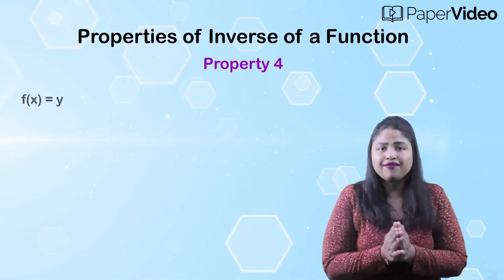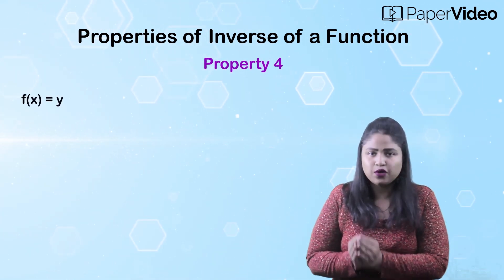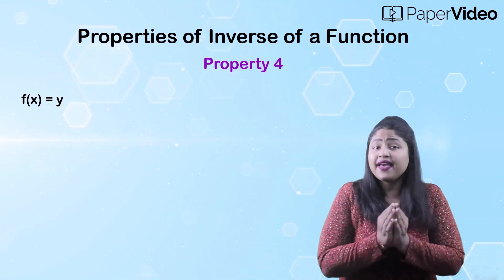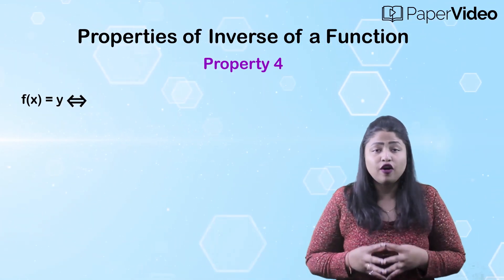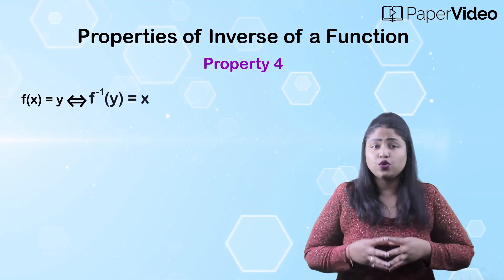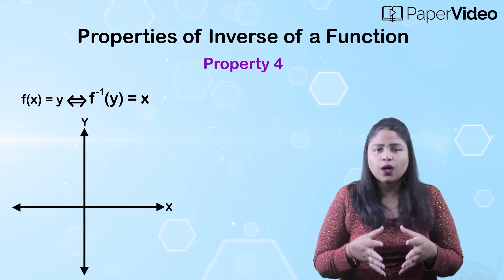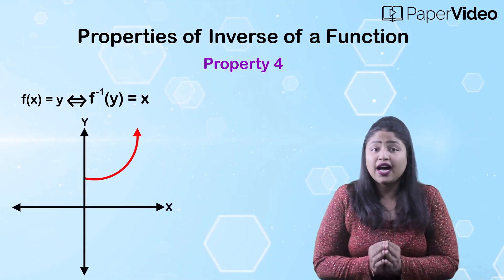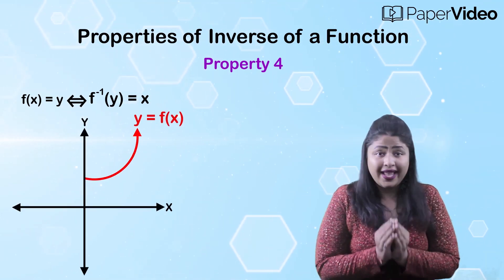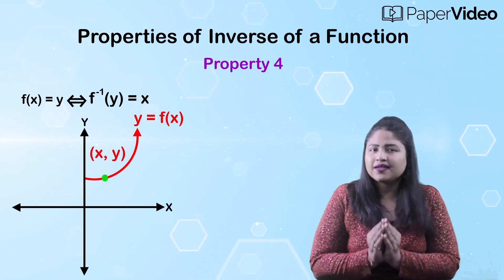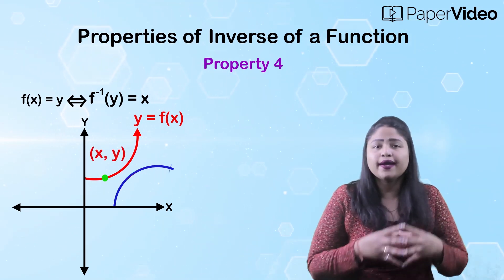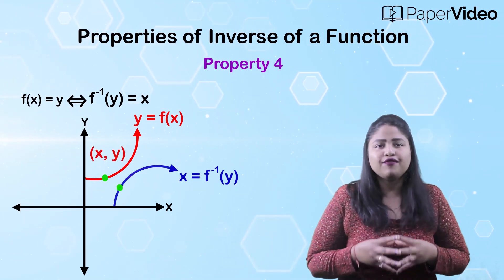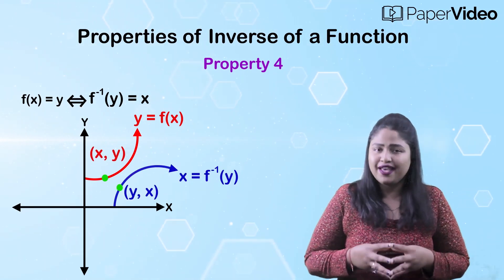According to the fourth property, f of x equals y if and only if f inverse of y equals x. This means that the ordered pair (x, y) is on the graph of the function f if and only if the ordered pair (y, x) is on the graph of the function f inverse.